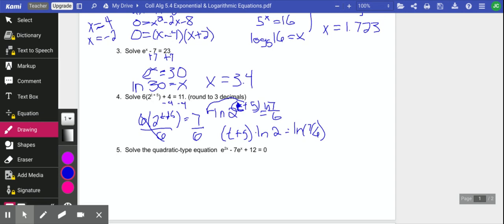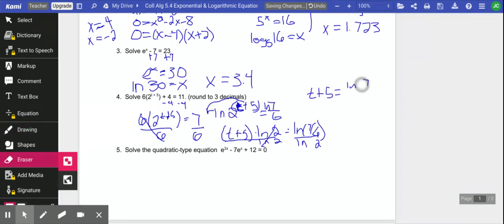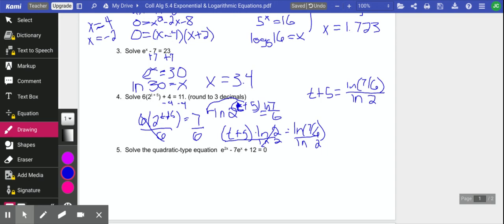Now, natural log of 2, that's just a number, so I can divide both sides by the natural log of 2. Those cancel. So now I have t plus 5 equals natural log of 7 sixths divided by natural log of 2.